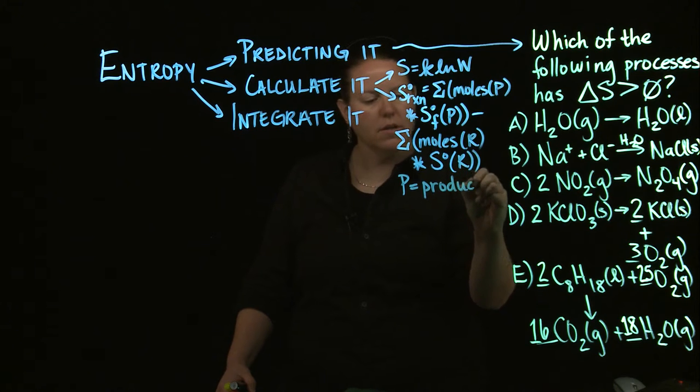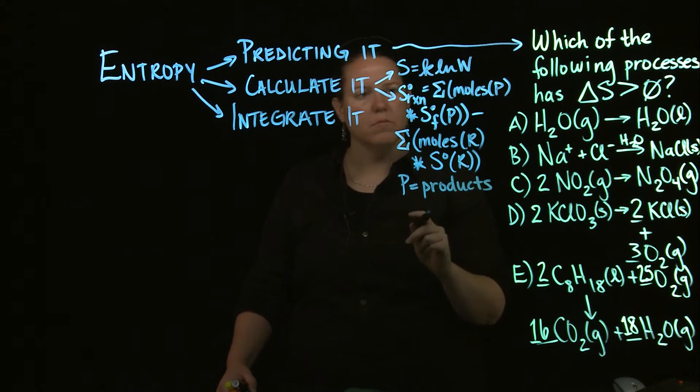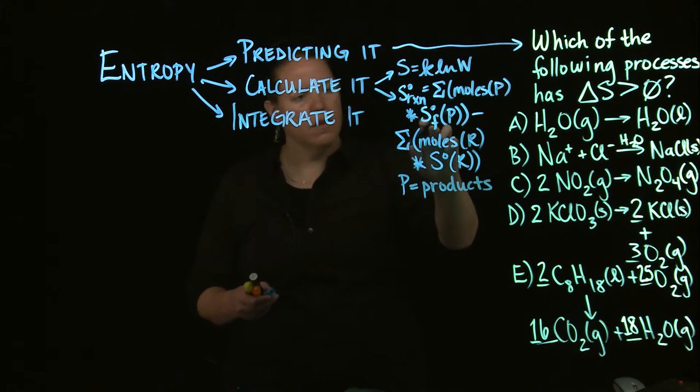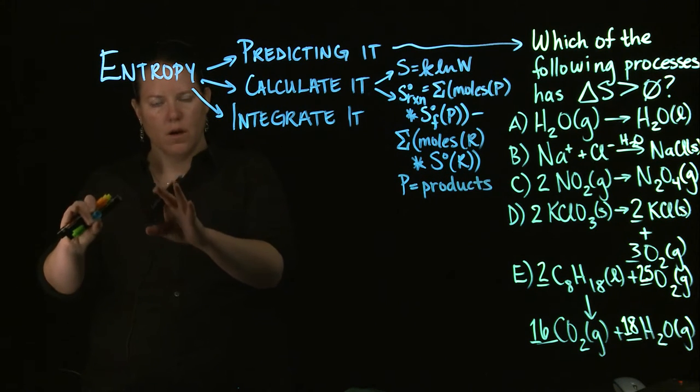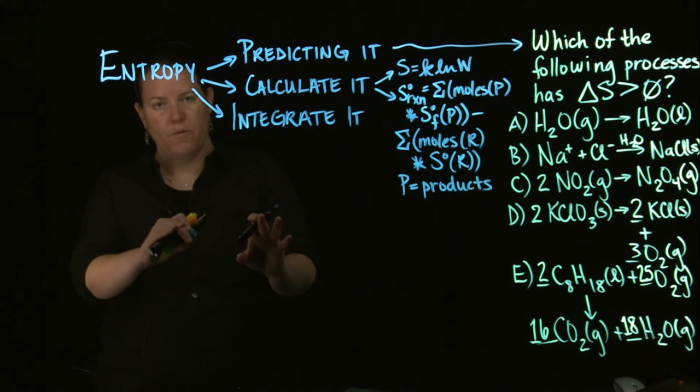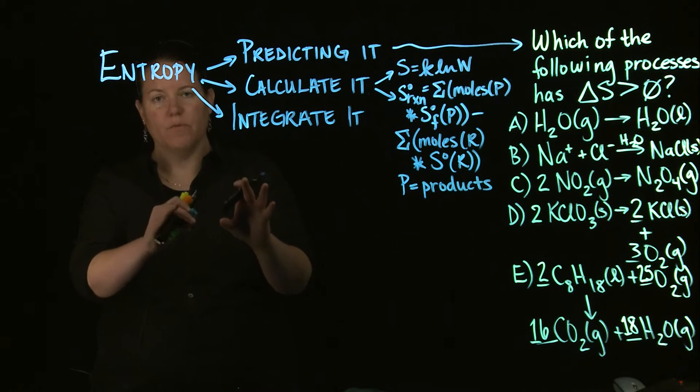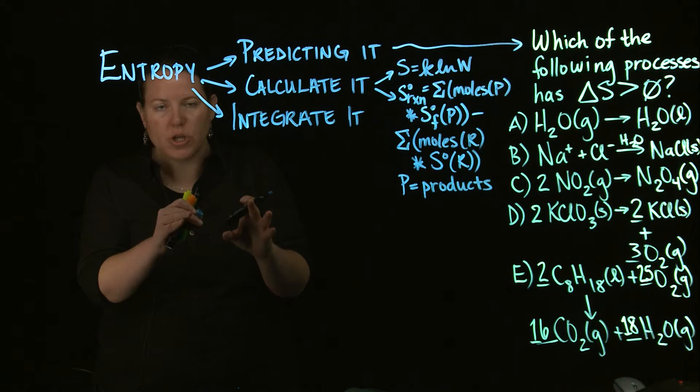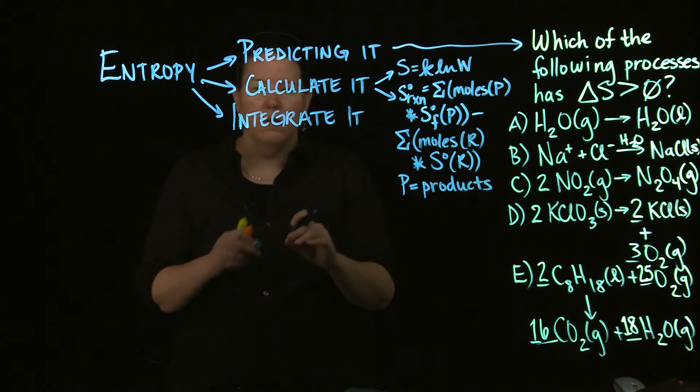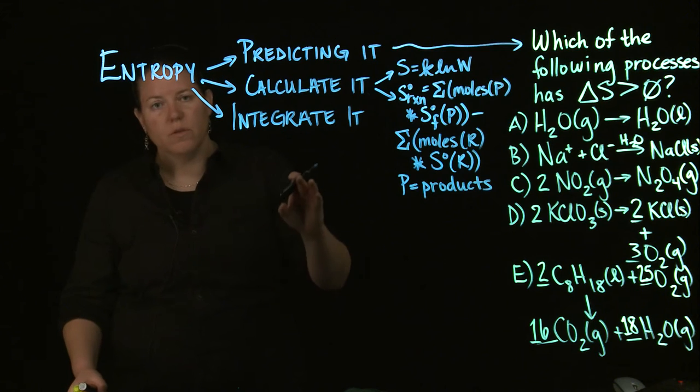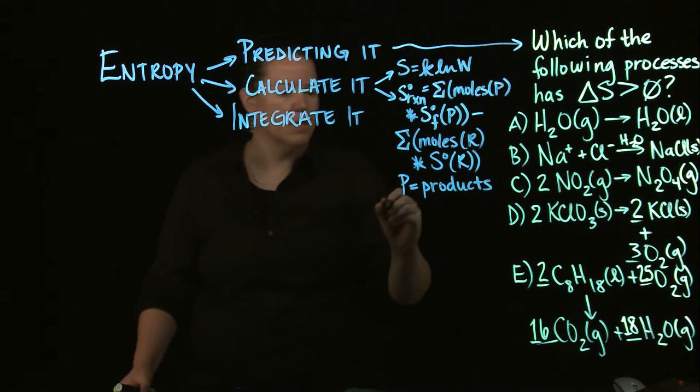And these little funky symbols here are sum, so basically you're taking the S associated with that particular compound, you're multiplying it by the coefficient in front of whatever it is in the reaction, balanced chemical equation, and then you're adding together the reactants, you're adding together the products, and the last step is products minus reactants. It's that process that we're thinking about.